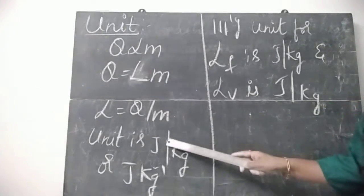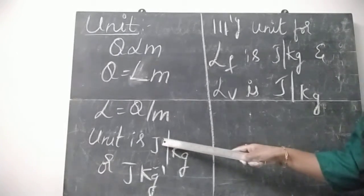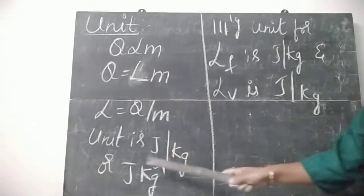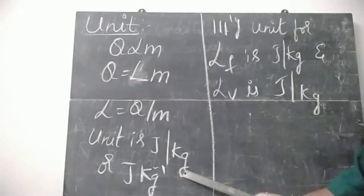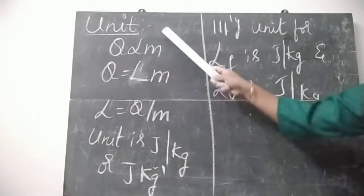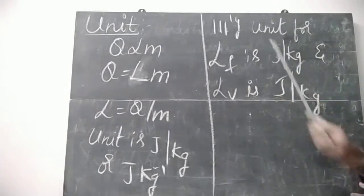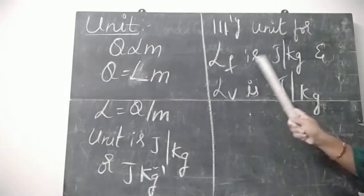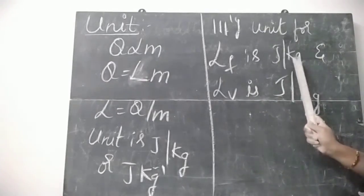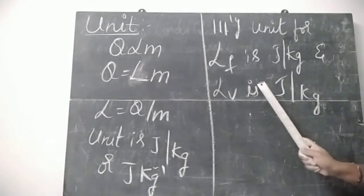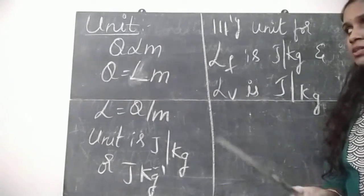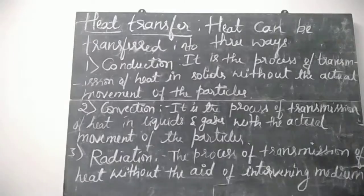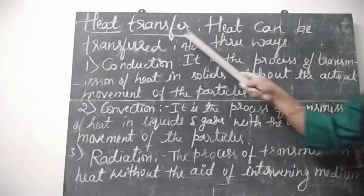L equals Q divided by M. The unit of latent heat is joule per kg.